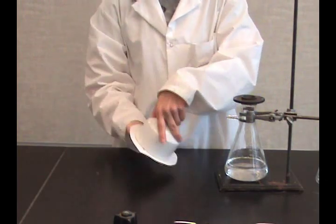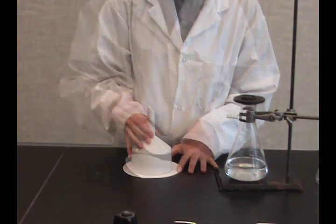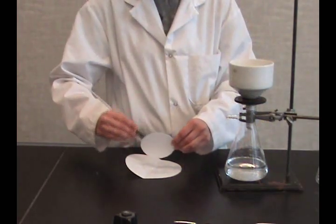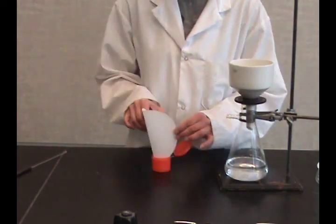Place it on top of the funnel and flip the funnel over. All the crystals and used filter paper will fall onto the larger one. Transfer to the collecting vessel.